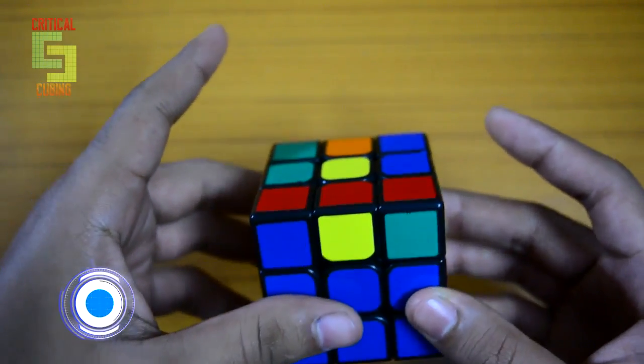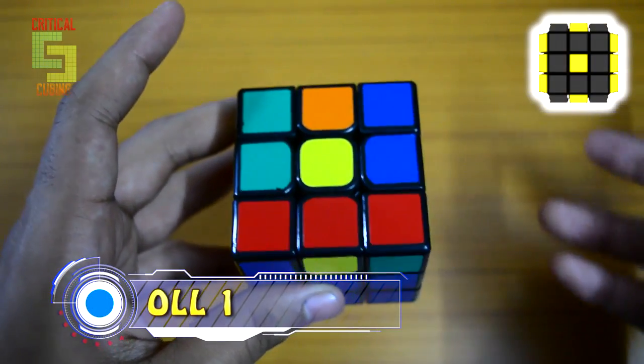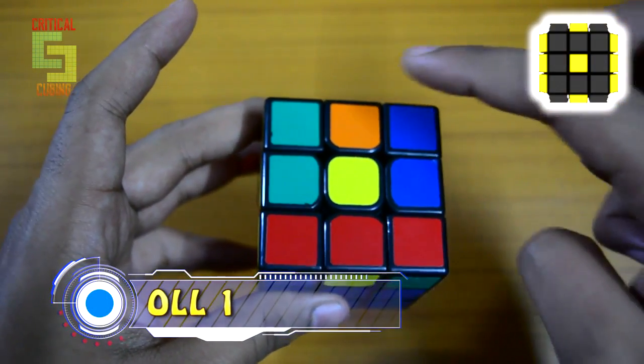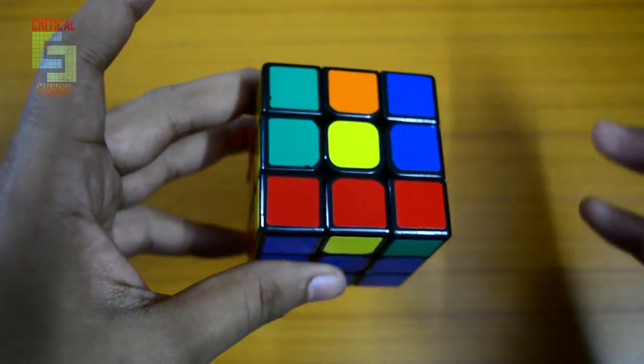Hey guys, it's me Critical Cubing, and this week we are going to start the dot OLLs. Dot OLLs are generally easy to recognize as they won't have any of the edges oriented, and there will be only corners on the top.